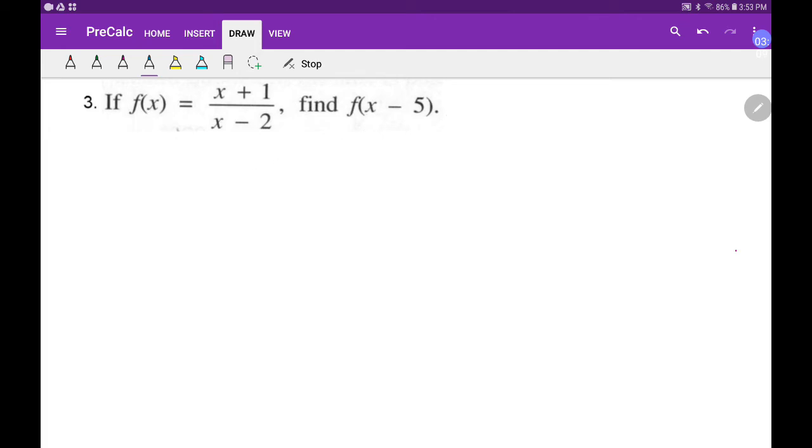So, f of x minus 5, well, okay, instead of plugging in x, I'm going to plug in x minus 5. So, that's going to be x minus 5 plus 1. And it's going to be x minus 5 minus 2. So, I plugged in, instead of x, I plugged in x minus 5.